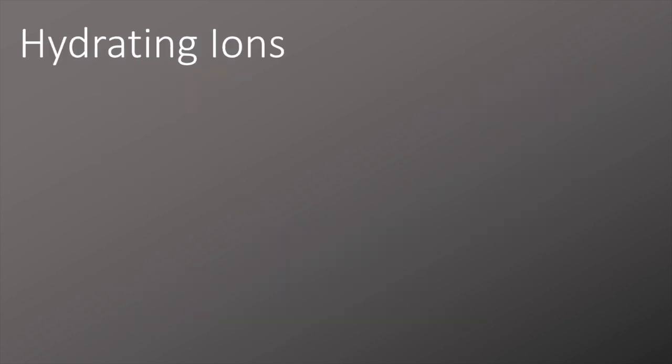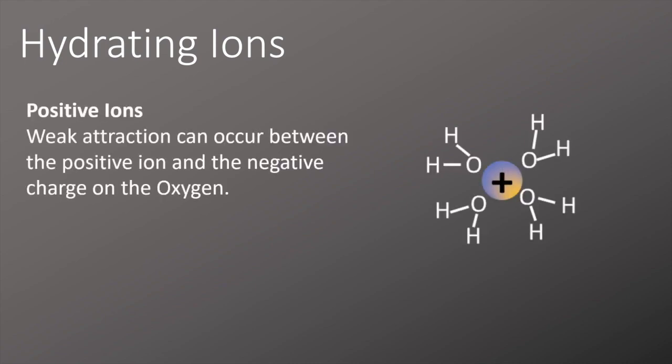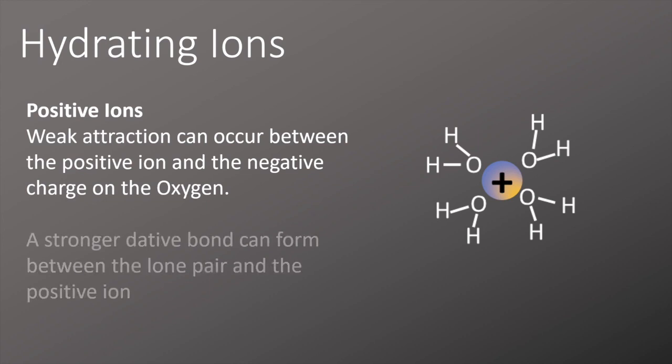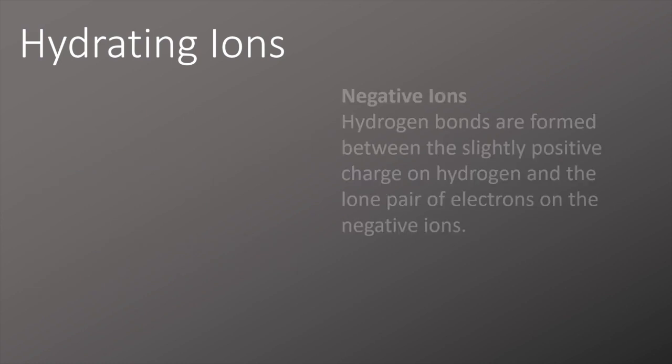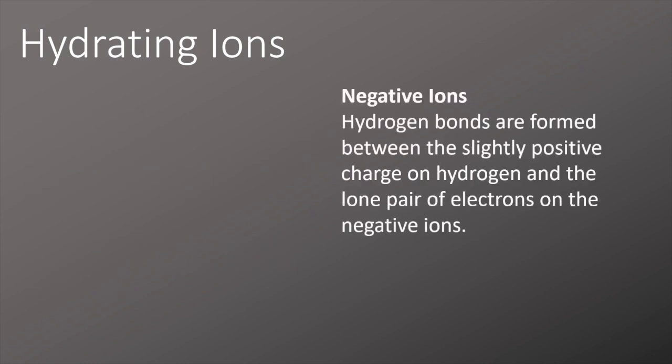When it comes to hydrating ions, positive and negative ions behave slightly differently. Positive ions form a weak attraction to the negative charge on the oxygen, and can also form a stronger dative bond to the lone pair, though this is more unusual. Negative ions tend to have a lone pair of electrons, which forms a hydrogen bond between their charge and the slightly positive hydrogen in the water molecule.